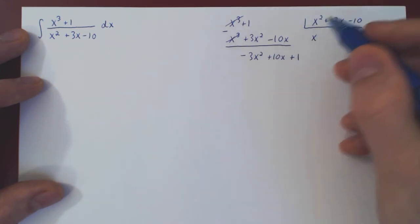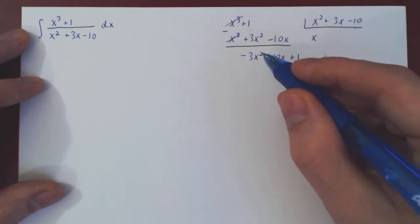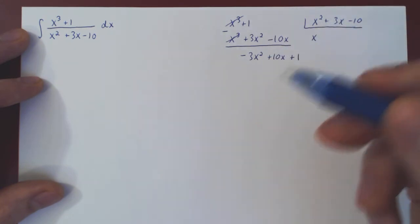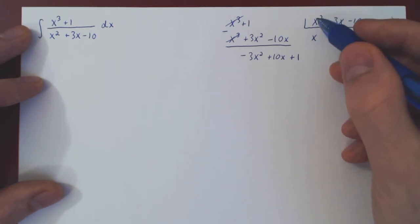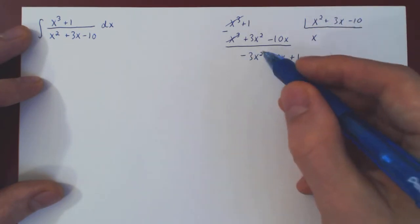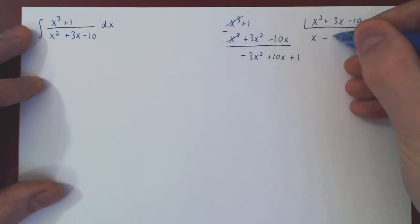The degree is 2 here. 2 is not less than 2, so we have to perform one more step in our long division. What times x squared is negative 3x squared? Of course, this is simply negative 3.